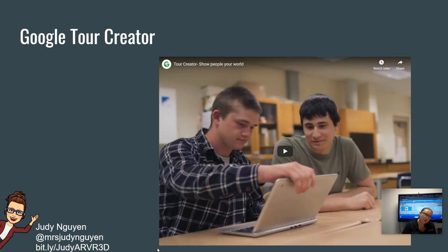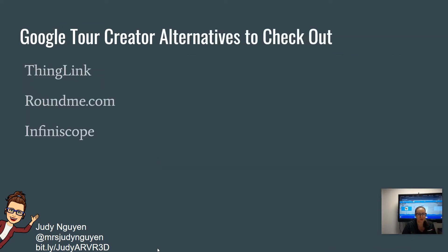Google Tour Creator was also really good where you could have students create tours — again, it is terminating next summer, so you only have one year to use it. But if you're looking for something to do, I really would check out Google Tour Creator. Here are some alternatives: ThingLink, RoundMe, and Infiniscope. Infiniscope I think is just tours — I don't think you can create anything — but with ThingLink and RoundMe, students can use 360 images and create their own tours.